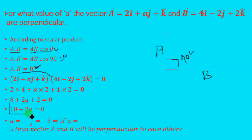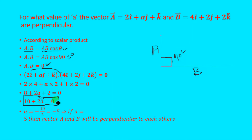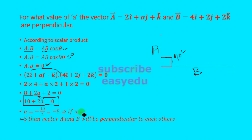From this equation, we determine the value of a for which vectors a and b are perpendicular. Solving for a, we get a = -10 / 2, which equals -5. So the value of a is -5. If a = -5, then vector a and vector b will be perpendicular to each other.